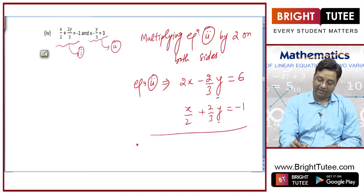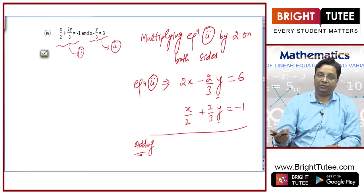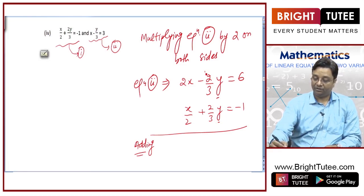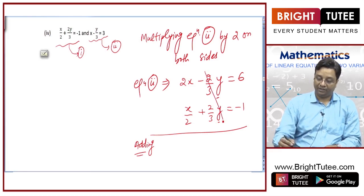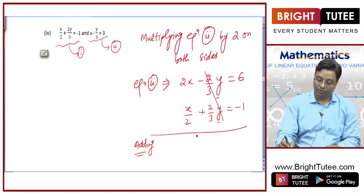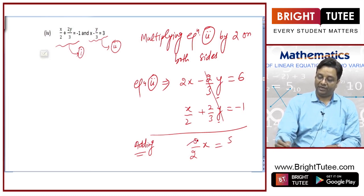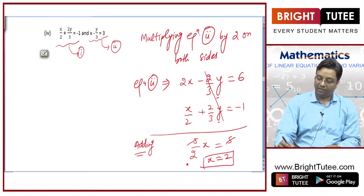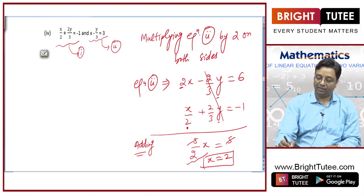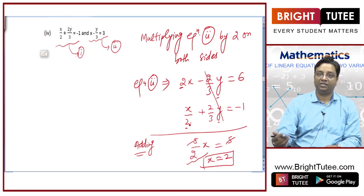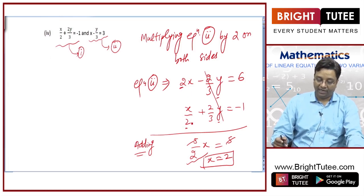Equation 2 will give me 2x minus 2 by 3 y equal to 6. And equation number 1 is x by 2 plus 2 by 3 y equals minus 1. Now, you see the coefficients of y got equated. Just add these — the y terms get cancelled. So, 2x plus x by 2 is 5 by 2 x, and it is equal to 6 minus 1 that is 5. So, 5 by 2 x = 5, which gives x is equal to 2.